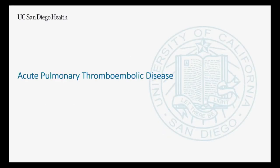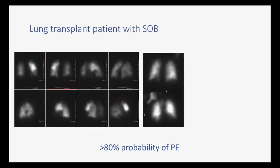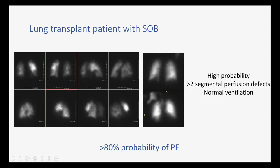So acute pulmonary disease. We all know about VQ scan. I'm not a huge fan of VQ scan, but it does have some advantages. This is a patient with a lung transplant where you can see multiple larger segmental lack of perfusion — perfusion defects — with normal ventilation. This is a high probability scan, which is not 100% but it's 80%. The VQ scan is very much about probabilities.